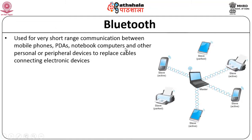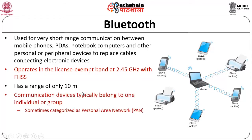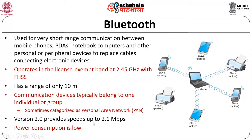Bluetooth is used for very short-range communication between mobile phones, PDAs, notebook computers, and other personal or peripheral devices. The idea is basically to replace cables connecting electronic devices. It operates in the license-exempt band of 2.45 GHz with FHSS — frequency hopping spread spectrum. The range is limited to about 10 meters, and the devices typically belong to one individual or group, which is why we refer to it as Personal Area Networks or PANs. Version 2.0 supports speeds of up to 2.1 megabits per second, and very low power consumption is a key characteristic of the Bluetooth technology.